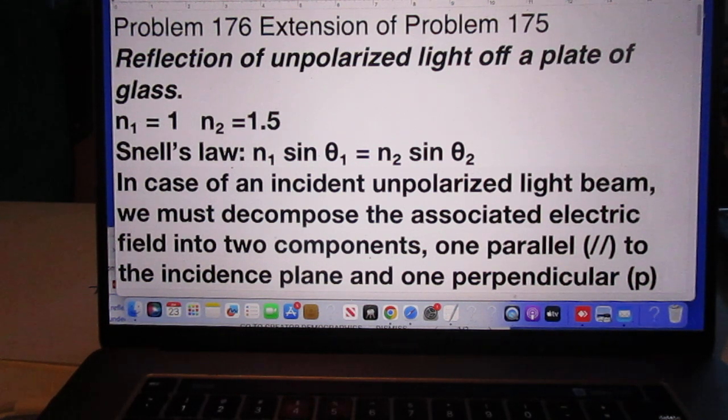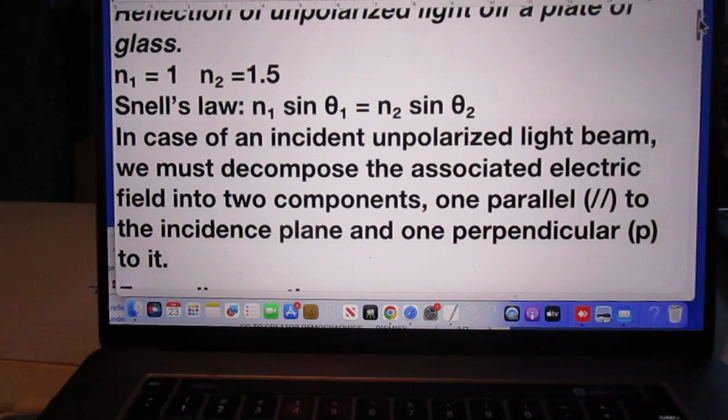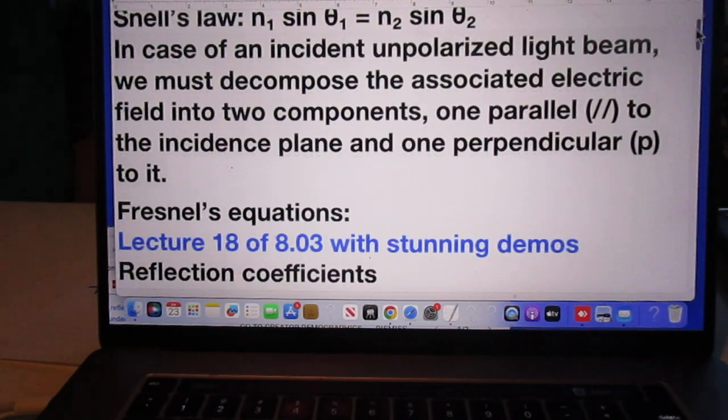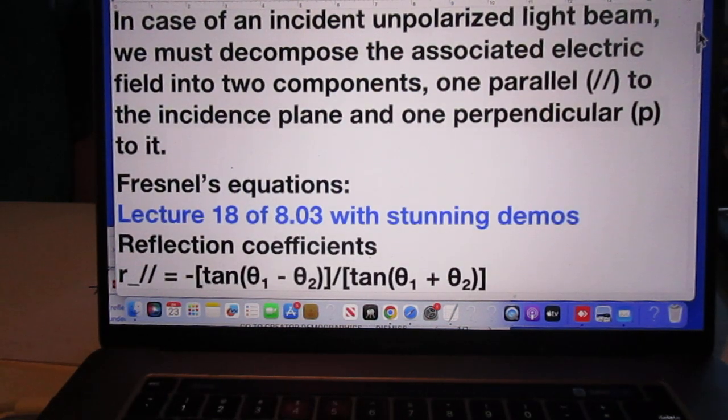Let's quickly go through this problem. It's not a physics problem, it is really a math problem. We reflect unpolarized light off a plate of glass. We know the indices of refraction. You can use Snell's law, even without understanding Snell's law. In case of an incident unpolarized light beam, we must decompose the associated electric field into two components, a parallel component and a perpendicular component to the incidence plane.